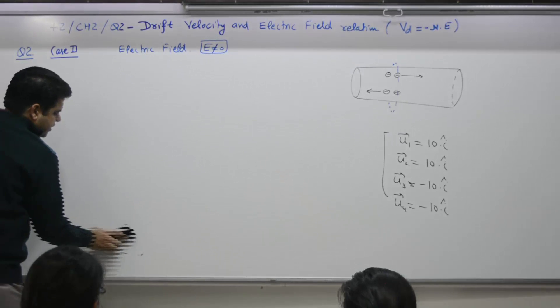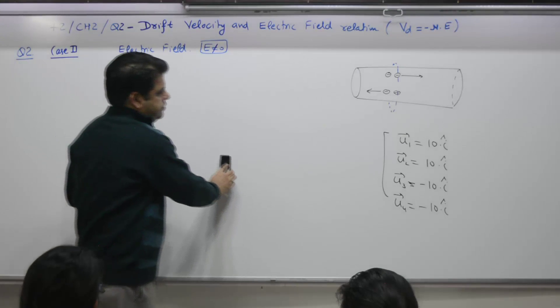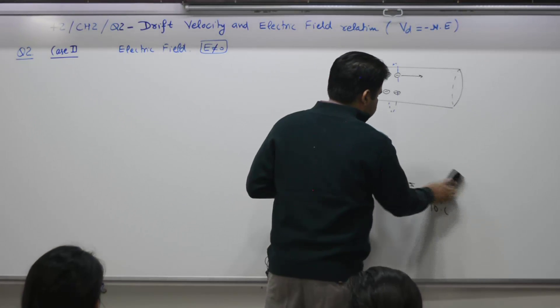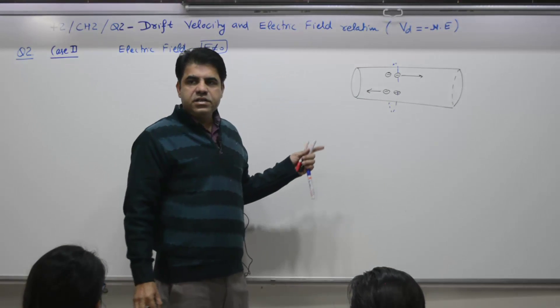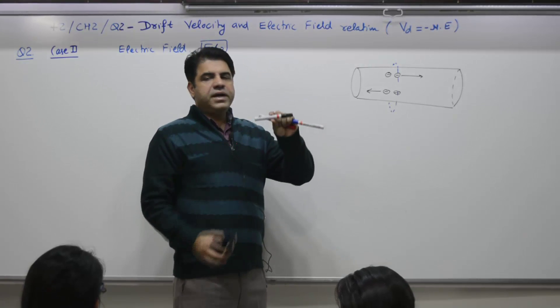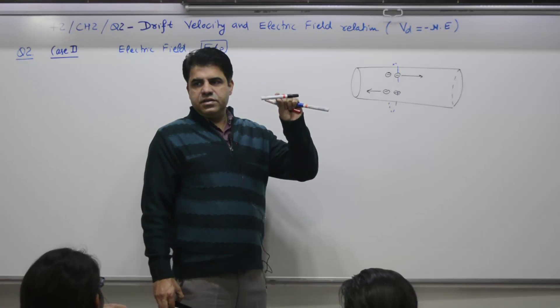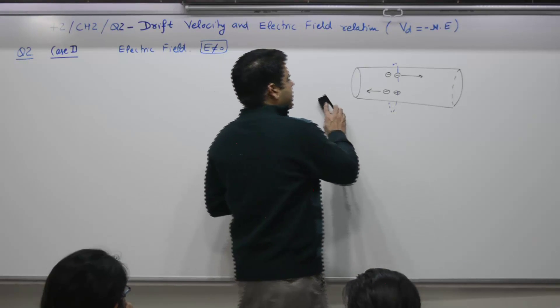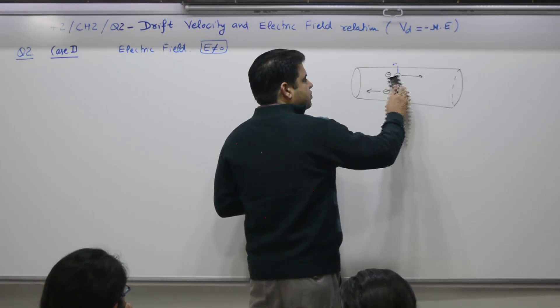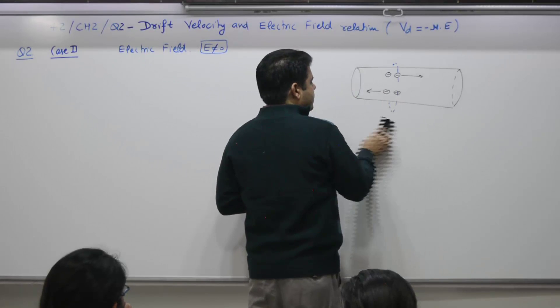Case number two: when a wire is subjected to electric field. What was the initial case? Normal wire, there is no battery connected across this. If a battery is connected across the wire, then what? This is the case - two electrons move to the right with the same velocity, two towards left.